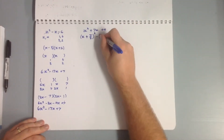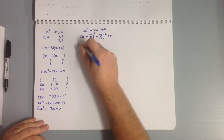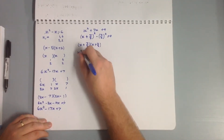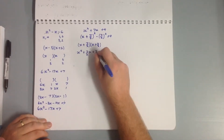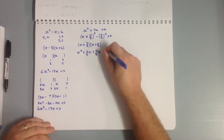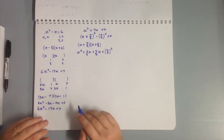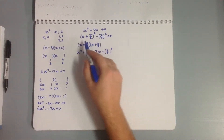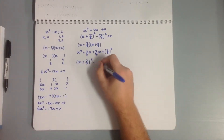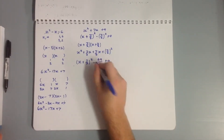...and then subtract that same (7/2)² again, then add on our 4. The reason we do this: if we expand (x + 7/2)(x + 7/2), we get x² + (7/2)x + (7/2)x = x², giving us our 7x — which is good. But we also get a (7/2)² term we don't want, so we subtract it to cancel it out. That's the idea behind completing the square.